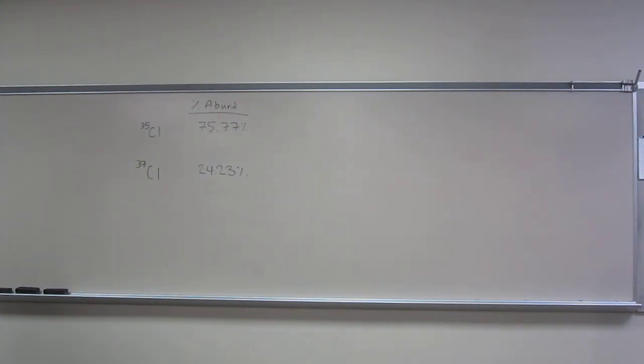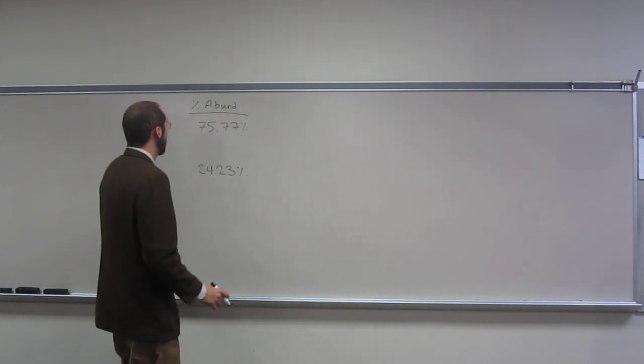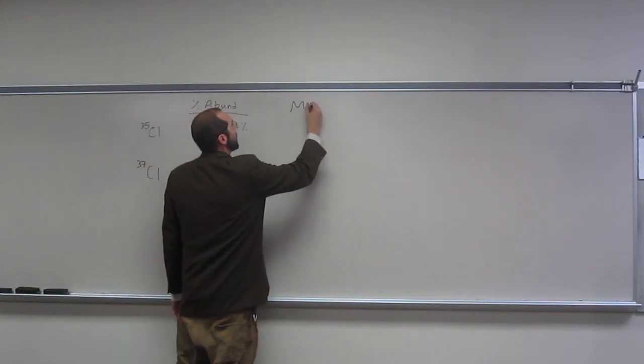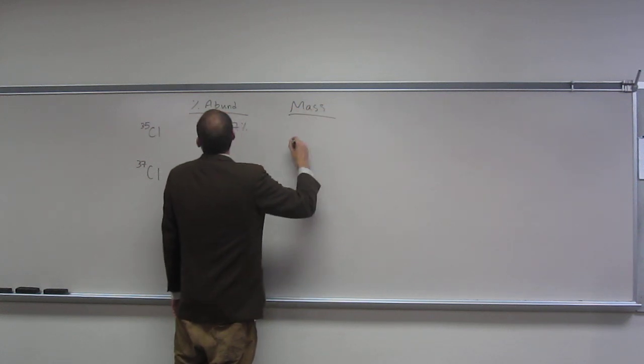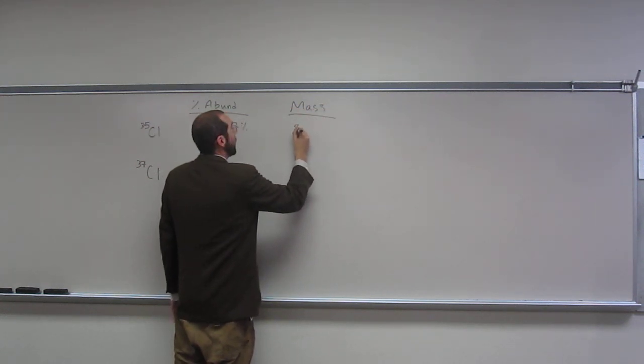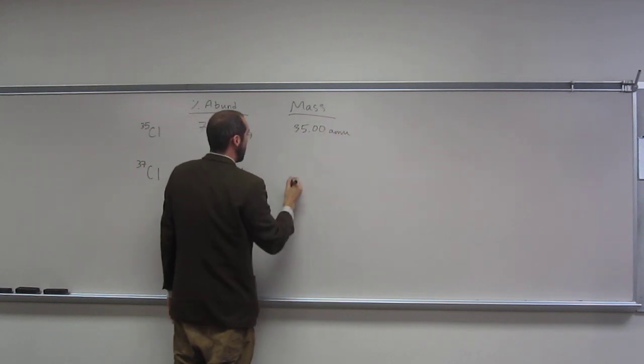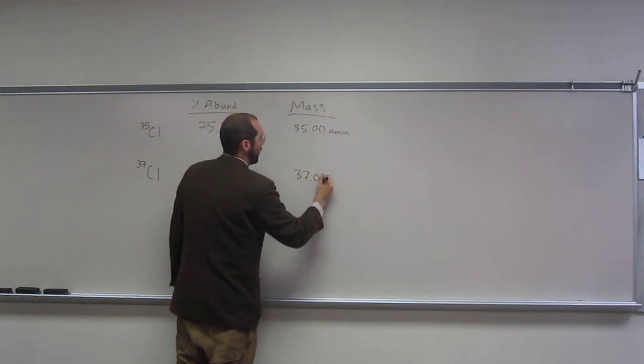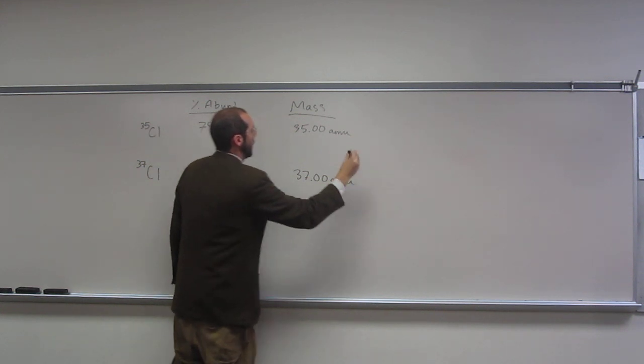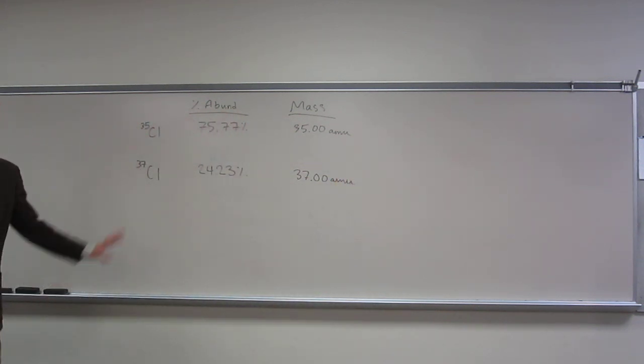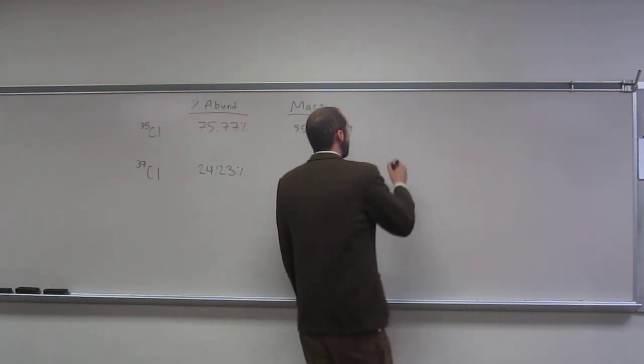So the way you do this is to, oh, and then we know the mass of these is going to be, this one's 35.00 amu. Okay, is everybody okay with that? So, the way you do this...